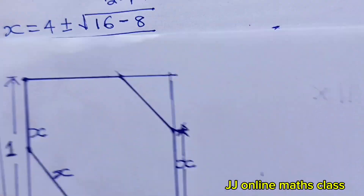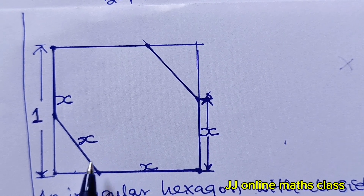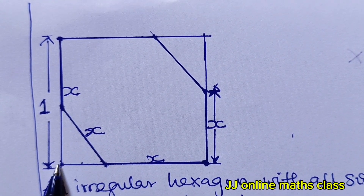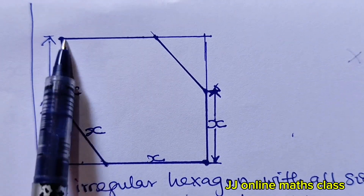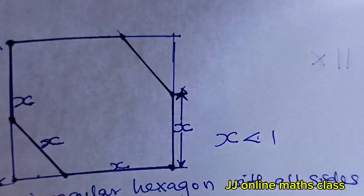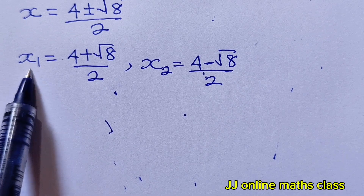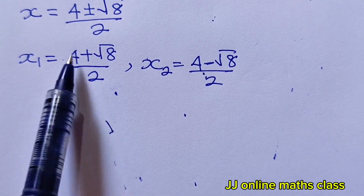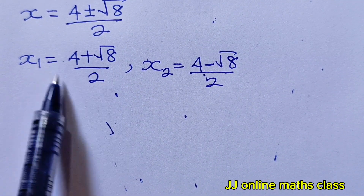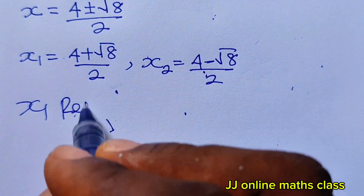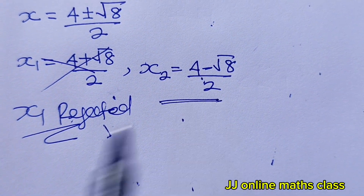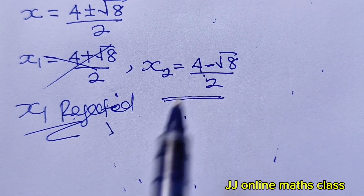Looking at our diagram, x must be less than 1, because x is only part of the full side of length 1. For x₁: 4/2 alone is already 2, and adding anything more only makes it larger, so x₁ > 1. Therefore x₁ is rejected. The correct solution must be x₂.